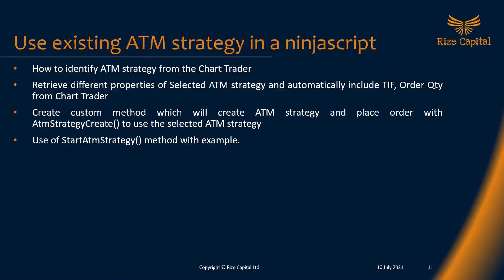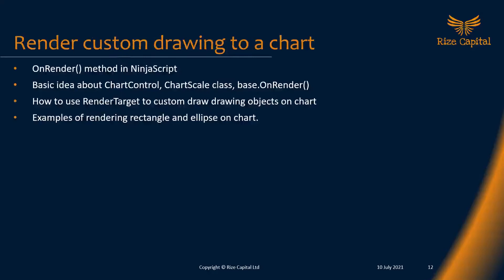After that we will talk about rendering custom drawings to a chart — this is a really big topic. We'll focus more on NinjaScript programming and discuss how to use this method, along with a basic idea about chart control and chart scale based on render. We'll also talk about how to use a render target to custom draw drawing objects on a chart. During that session, we'll look at how to draw a rectangle and ellipse on charts so that you can use that knowledge to render other shapes and objects on your chart.